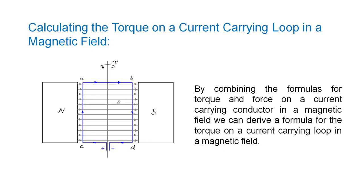We can derive the formula for the torque on a current carrying loop in a magnetic field, which is free to turn about an axis as is shown in the diagram, by combining the formulas for the force on a current carrying conductor in a magnetic field and the formula for torque. Let us begin by defining our loop as being rectilinear, rigid and having corners A, B, C and D.